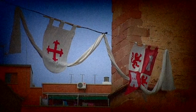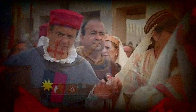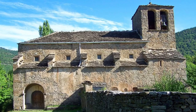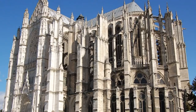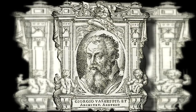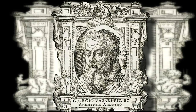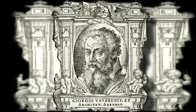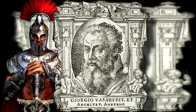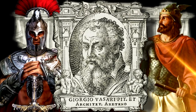Durante la Edad Media, dos estilos olvidaron lo que griegos y romanos nos enseñaron: el románico y el gótico. Fue el pintor, arquitecto y tratadista Giorgio Vasari el que puso los nombres a estas corrientes estilísticas, atribuyendo el primero a los romanos —de ahí el nombre— y el segundo a los godos.